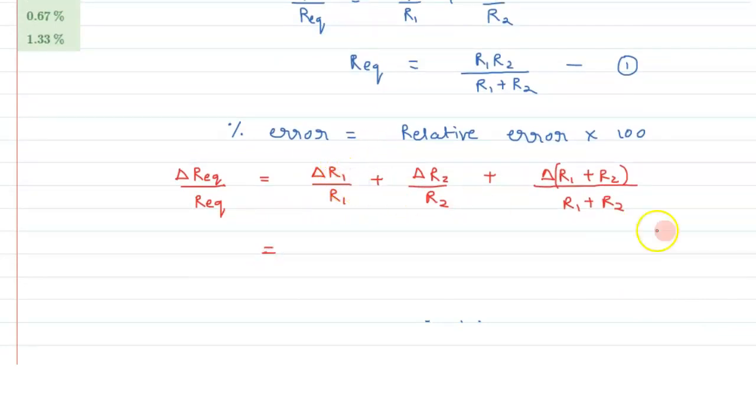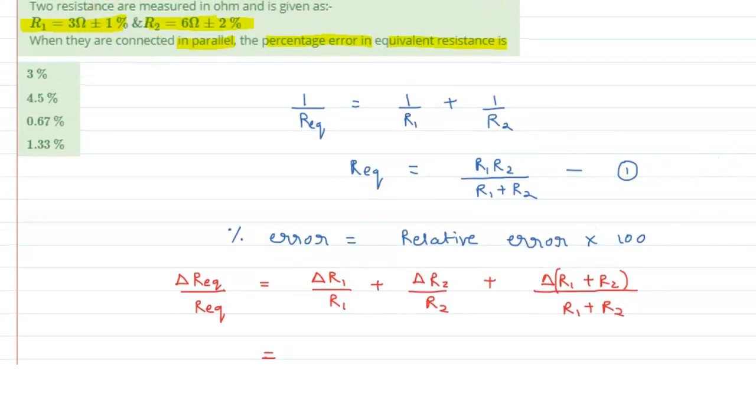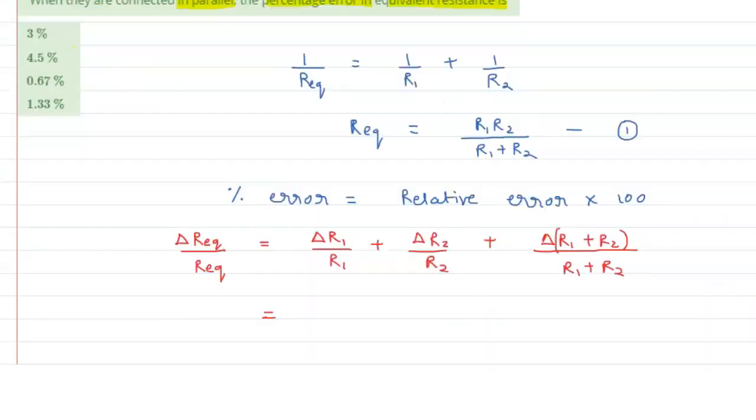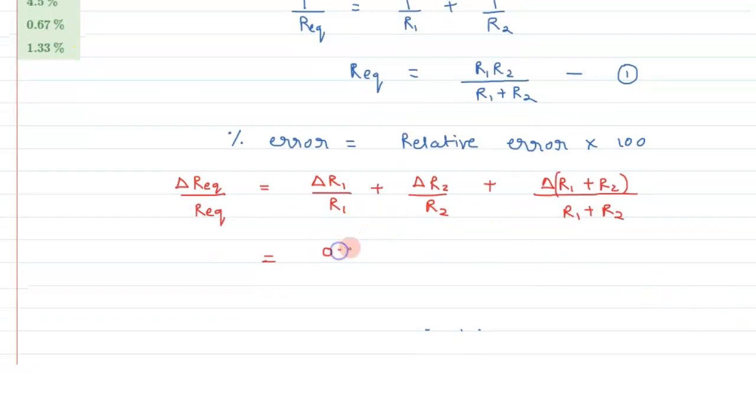Now the value of delta R1, that is error in R1, is given as 1%, that is 1% of 3, that is nothing but 0.03 divided by original resistance, that is the original value is given as 3 ohm. Plus here it has been given 2% of 6, that is 0.12 divided by 6.